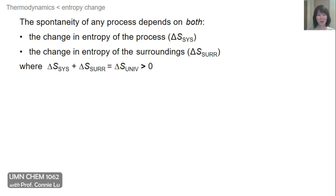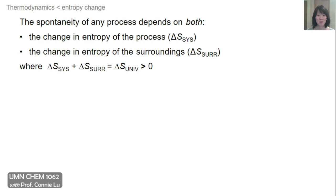In this lecture video, we're going to focus solely on the entropy change of a chemical reaction. Recall from the last video that the spontaneity of a process depends on both the change in entropy of the system, or delta S, as well as the change in entropy of its surroundings. The sum of these changes, which equals the delta S of the universe, must always be greater than zero for any real process to occur.